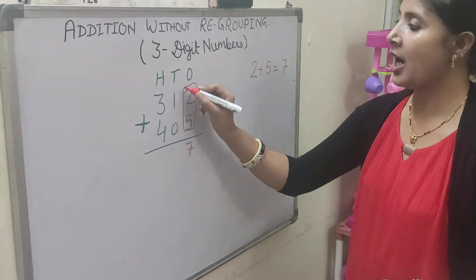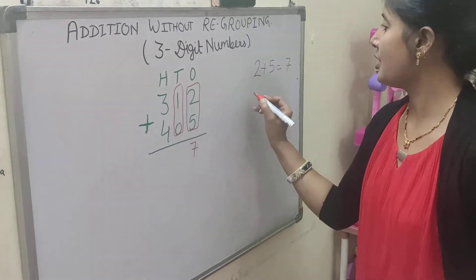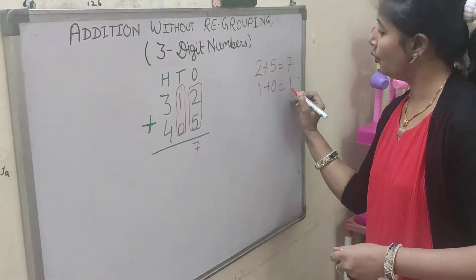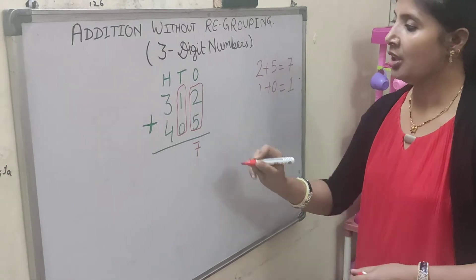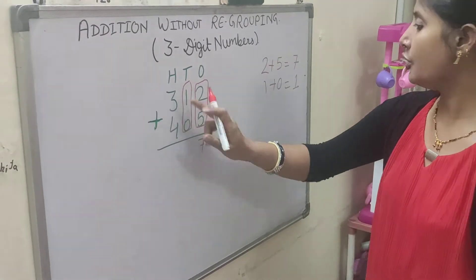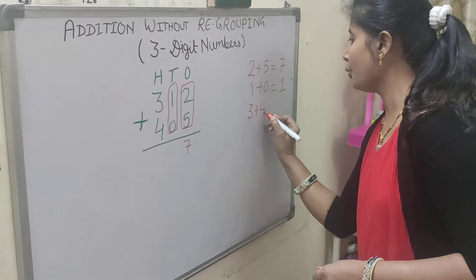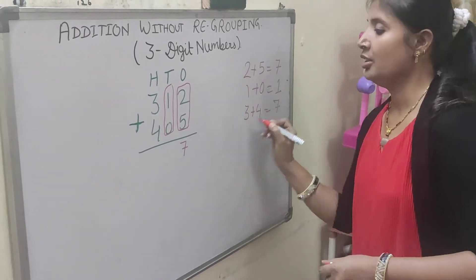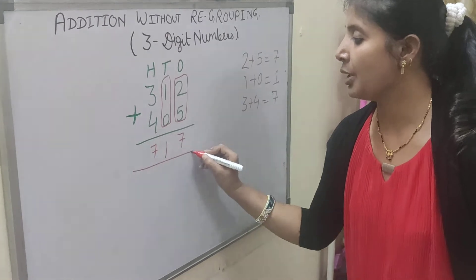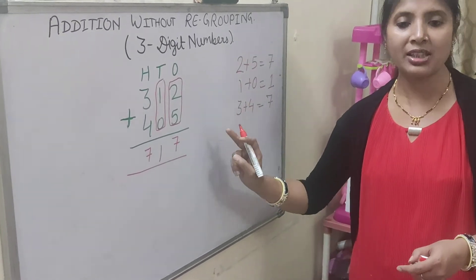Now we have to add these 10s place digits. That is 1 plus 0, which is equal to 1. Now at the 100s place we have 3 and 4, so we have to add 3 and 4. What do we get? 7. So we have a total number of 717 pencils.